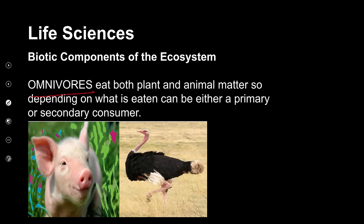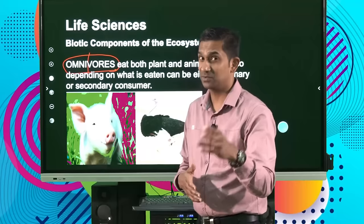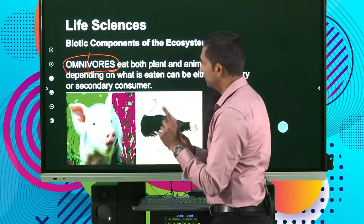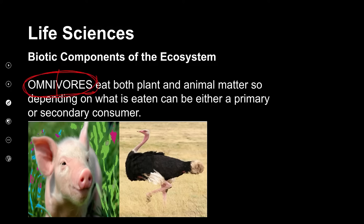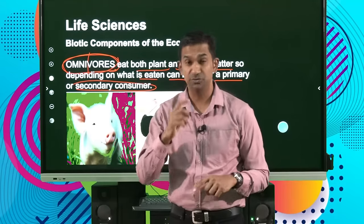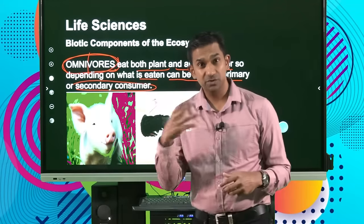We also get those individuals called omnivores. We are omnivores as well, because we have a diet that consists of both plant material and animal material. Our natural diet is that we're omnivores — these individuals consume both plant and animal matter. They depend on what is eaten and can either be a primary consumer or a secondary consumer. Your omnivores can either be primary consumers right at the bottom of the food chain, or secondary consumers where they consume other prey and also consume a plant diet.